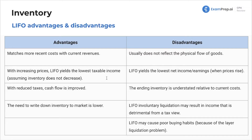That's both a pro and a con — a pro because you get lower taxable income, but you'll also report lower net income or earnings. The ending inventory is understated relative to current costs. LIFO involuntary liquidation may result in income that is detrimental from a tax perspective — that's the LIFO liquidation layers issue. And LIFO may cause poor buying habits because of the layer liquidation problem.